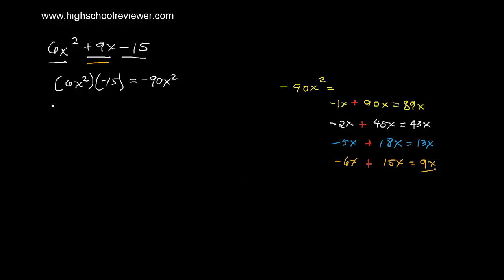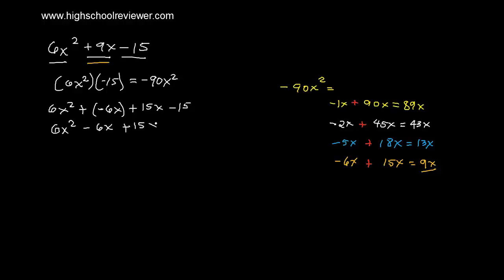We can rewrite the equation. Rewriting, we now have 6x squared plus negative 6x plus 15x minus 15. We can combine like terms. Let's combine 6x squared with negative 6x, giving 6x squared minus 6x, plus 15x minus 15.